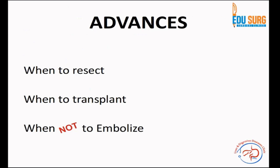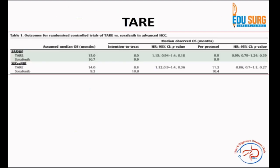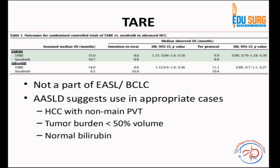One advance that is coming is knowing when not to embolize with TACE. Trans-arterial radioembolization (TARE) is another interesting advance — with two key studies, the SARAH and the SIRveNIB trials. While TARE is not yet part of the European group or BCLC guidelines, the AASLD is already suggesting its use especially where TACE is contraindicated — mainly in patients with VP3. The Liver Cancer Study Group of Japan suggests TARE when tumor burden is less than 50% of liver volume and bilirubin is normal. TARE will expand inclusion criteria in BCLC-B because it does not completely occlude the artery.